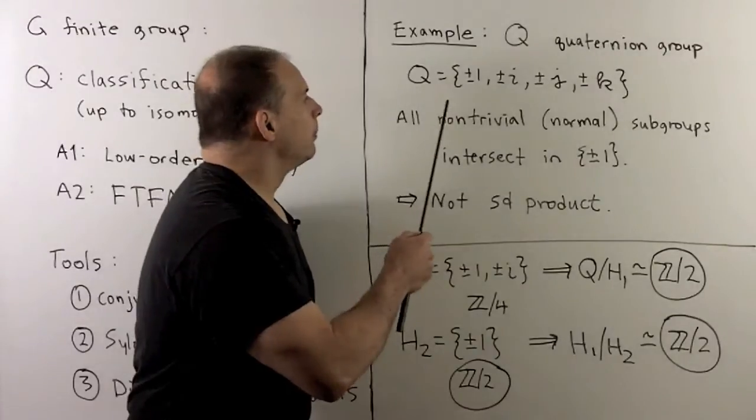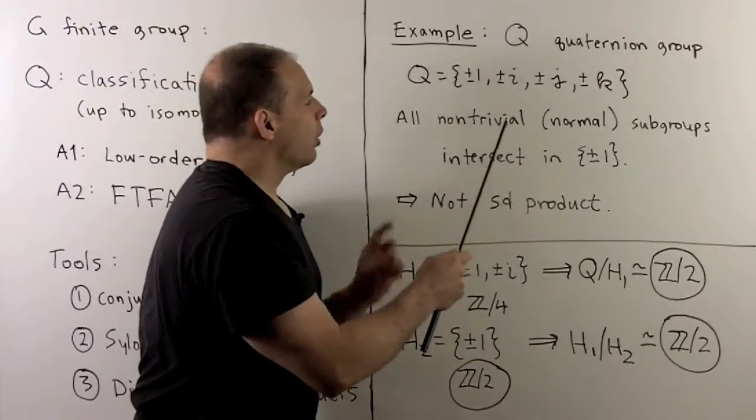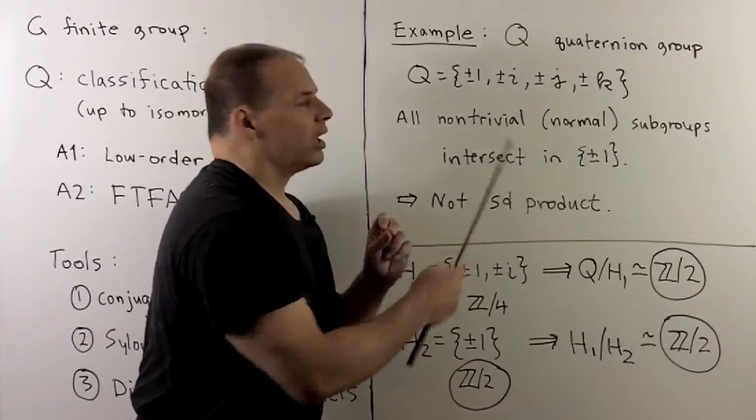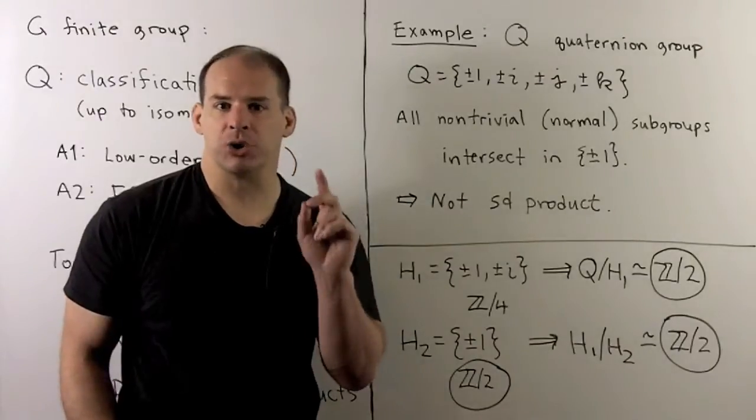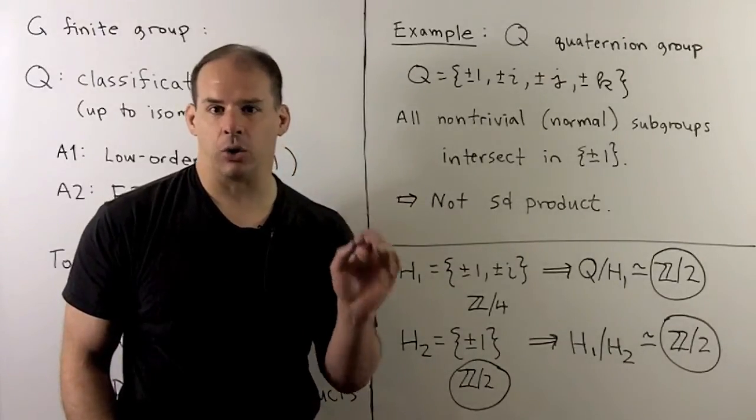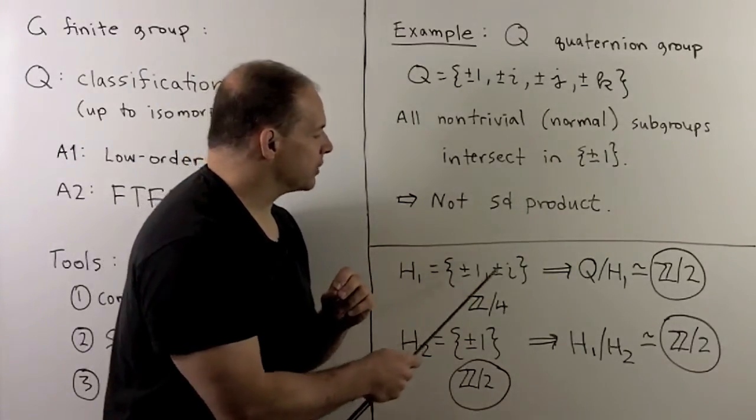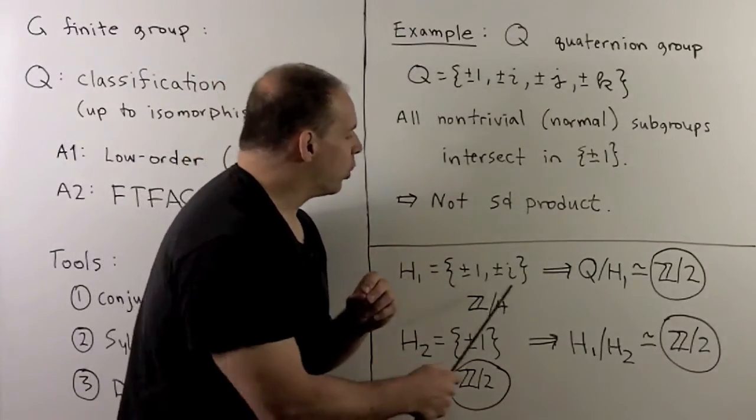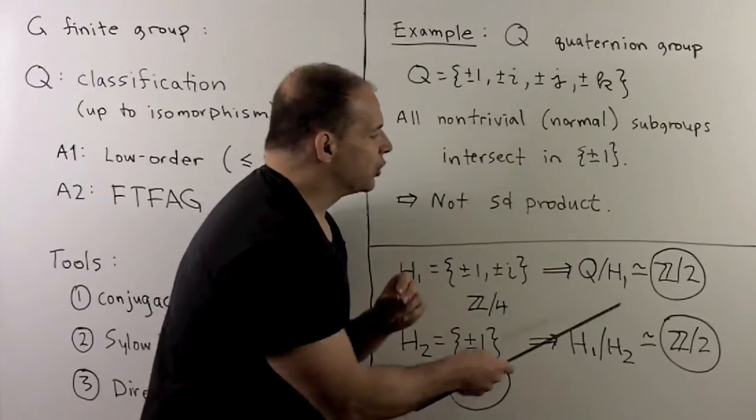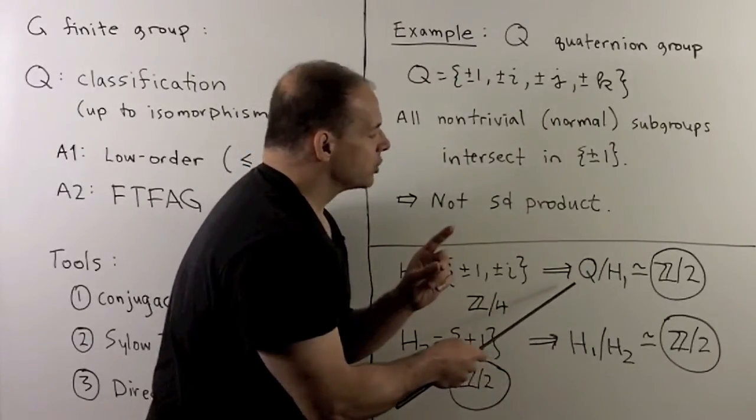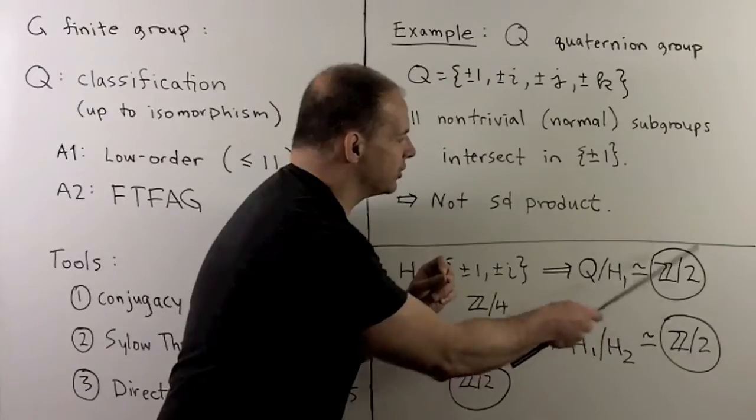So, what I want to do, we have the quaternion group. And what I want to find is a normal subgroup that's as large as possible without being the entire group. So, if I take H1 equal to plus minus one plus minus I, I can form the quotient group. That'll have two elements. So, this quotient group is isomorphic to Z mod two.